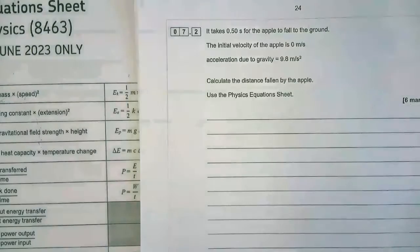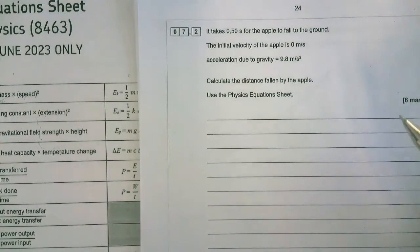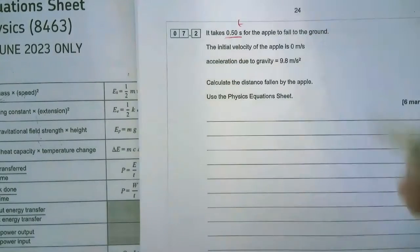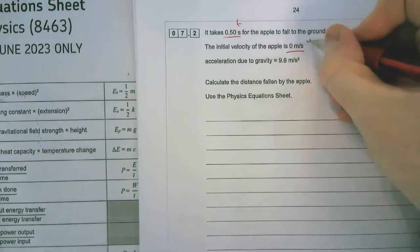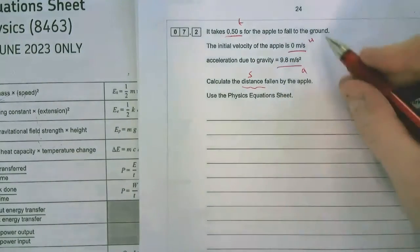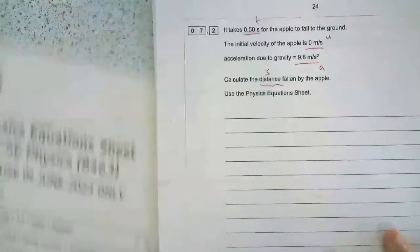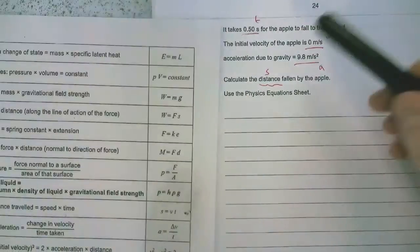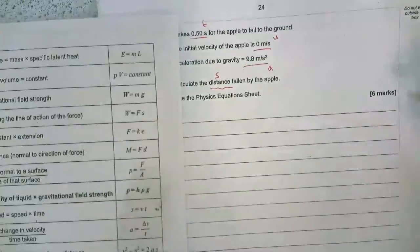The second equation we're going to look at is another six marker, so multi-step equation. We've got the time, we've got the initial velocity, which we're going to use the symbol U, and we've got the acceleration, and we've got the distance. Now the reason why it's six marks is because there are two equations and it's a little bit tricky to figure out what to use.